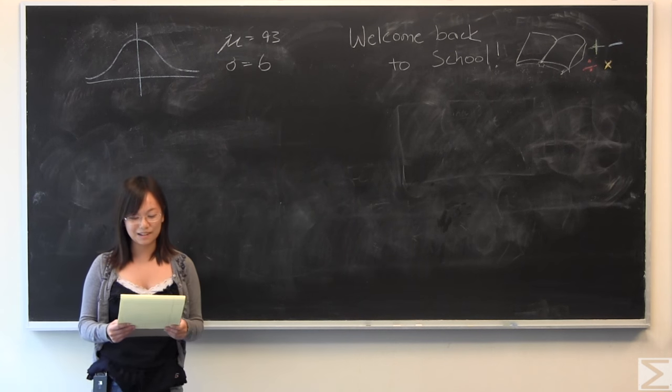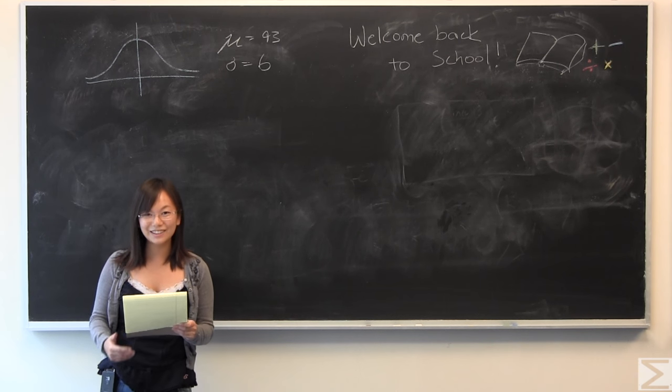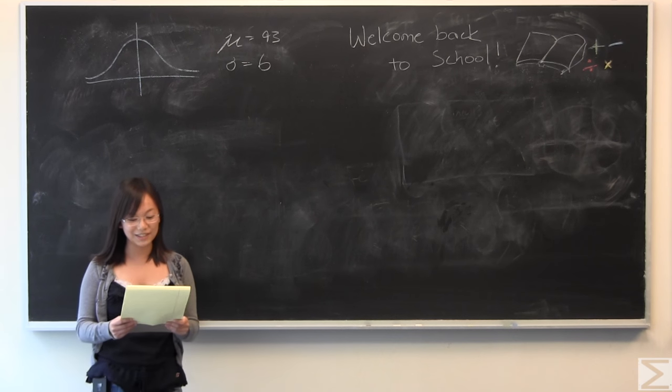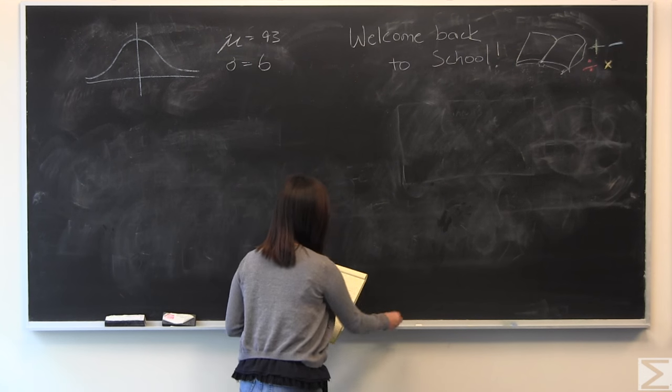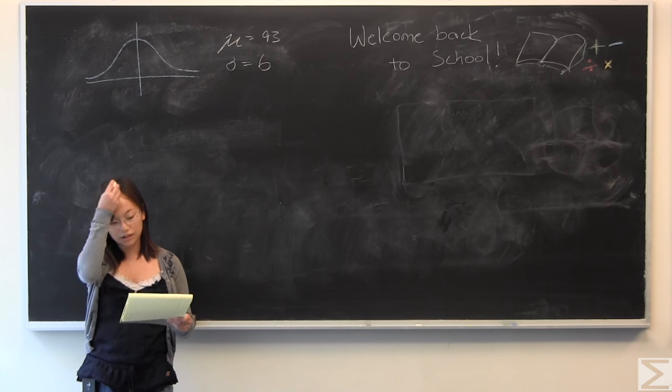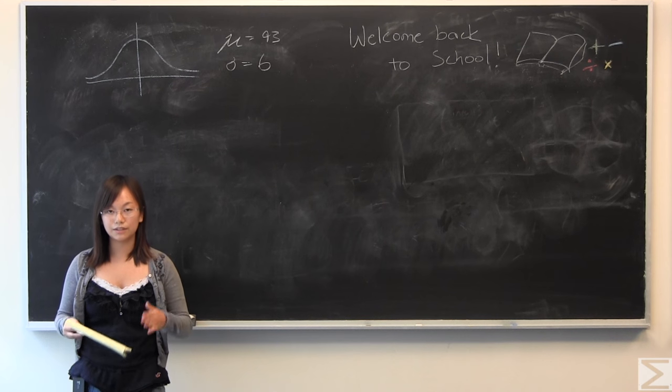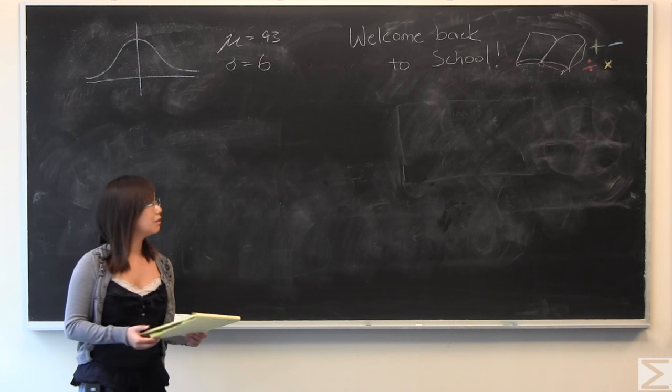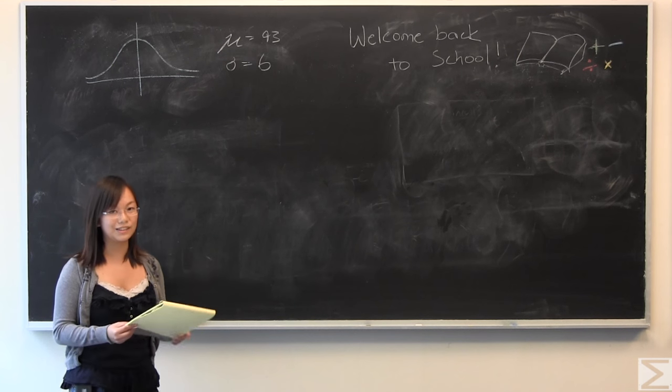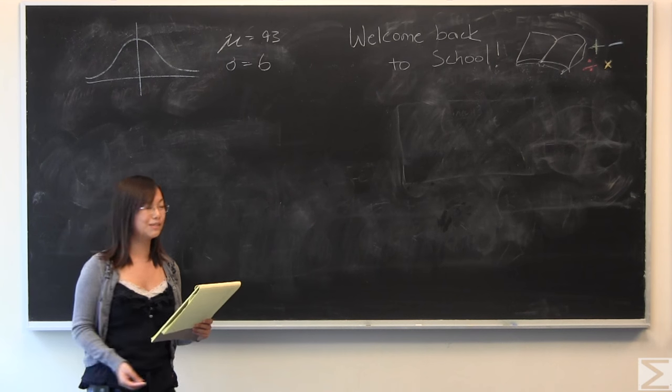This week's Problem of the Week is a probability question. You are given the average, which is a whopping 93% for students at this school, and you are given a standard deviation of 6. The first part of the question asks you, if you pick 12 people from this population, what is the probability that your average is going to be greater than 90? We're going to use the standard normal curve, z-values and z-table for that.